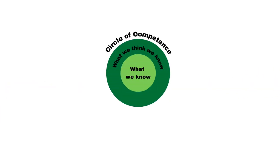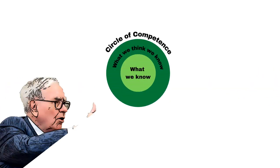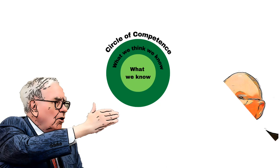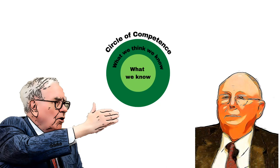The Circle of Competence mental model was developed by Warren Buffett and his business partner, Charlie Munger. It is a model that describes the area of understanding that matches a person's skills, abilities, or expertise.